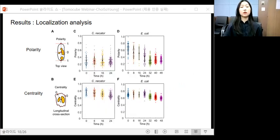As shown in these graphs, polarity and centrality change with the culture time. Especially compared with C. necator cells, the E. coli cells showed higher polarity value at the early period of the cultivation.